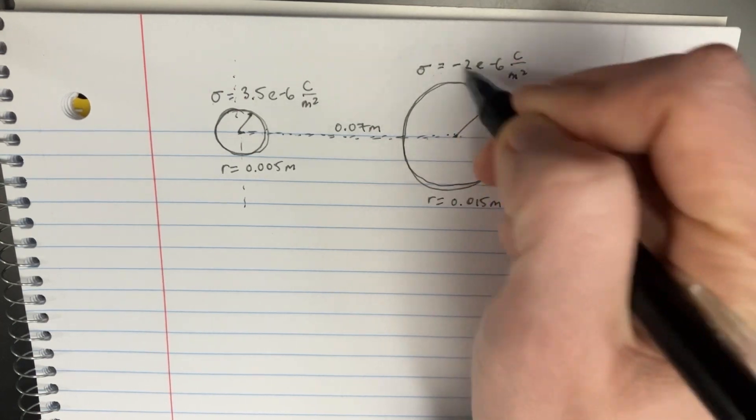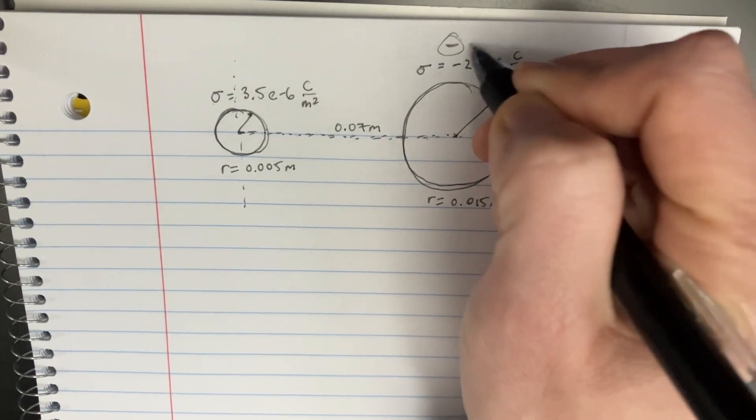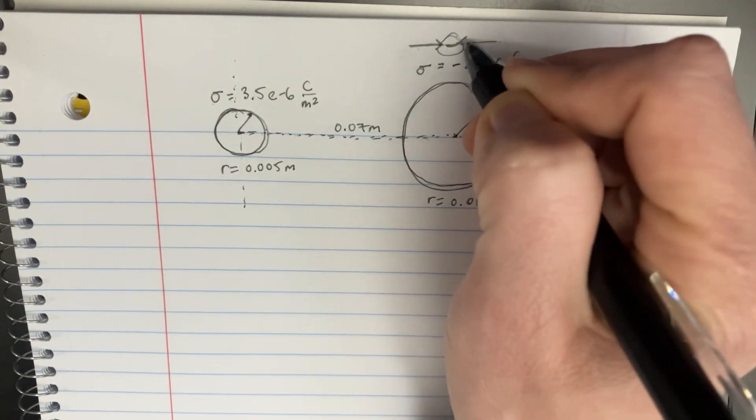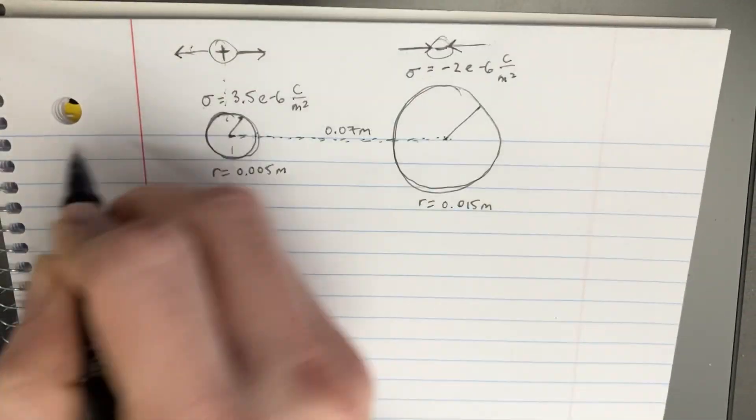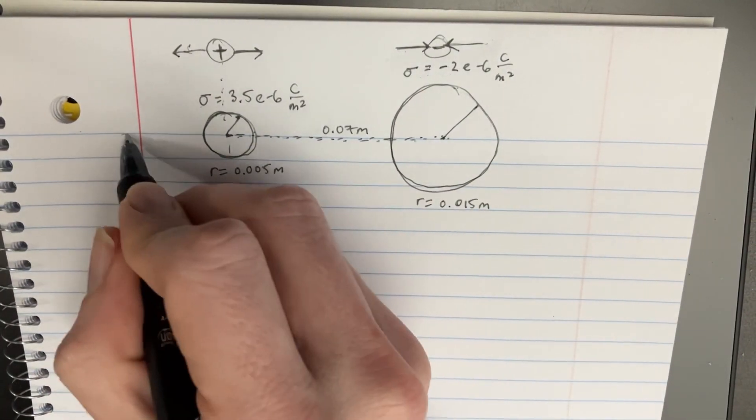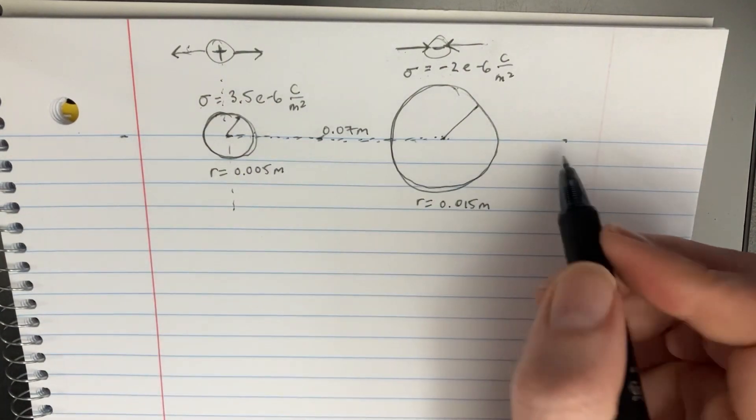If these are going to be a charge, this is going to be a negative one. It's going to be emitting an electrical field with arrows pointing inwards to it. And this one is a positive charge, so the arrows will be pointing out of it, right?